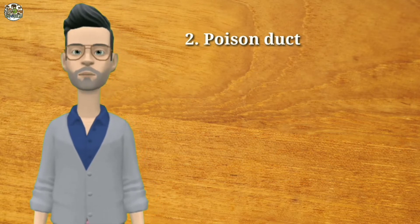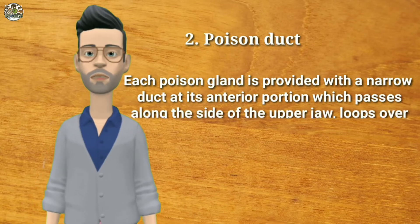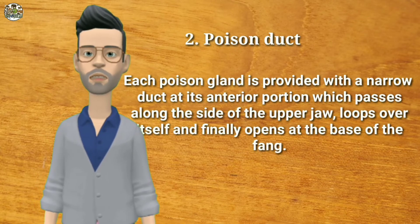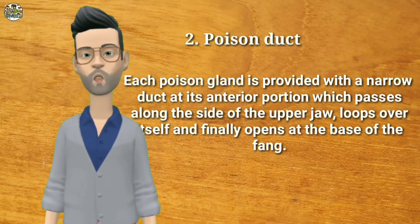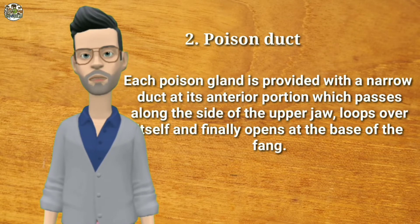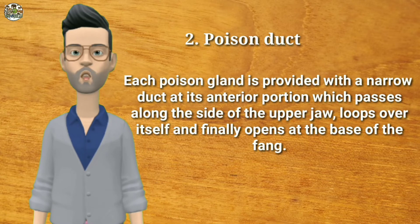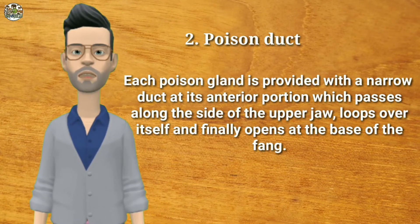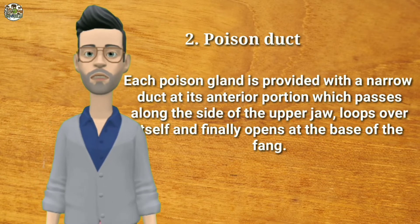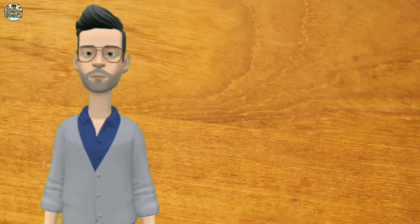Poison duct: each poison gland is provided with a narrow duct at its anterior portion, which passes along the side of the upper jaw, loops over itself, and finally opens at the base of the fang.